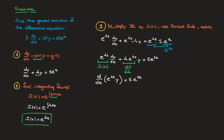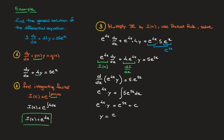All I have to do now is integrate both sides with respect to x. The left-hand side turns into e^(4x) times y. On the right-hand side, integrating 5e^(5x) gives e^(4x) times y equals e^(5x) plus a constant of integration c. To find the general solution, I divide both sides by e^(4x), which gives y equals e^(5x) plus c over e^(4x). That's the final answer.